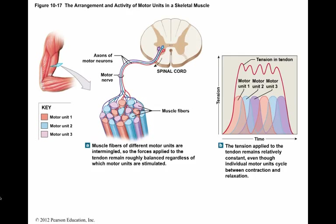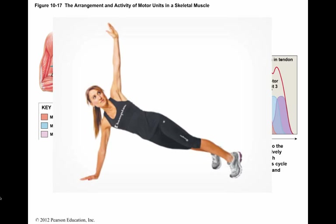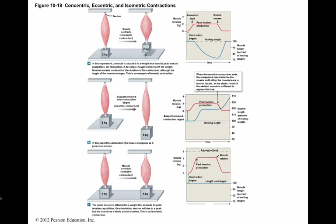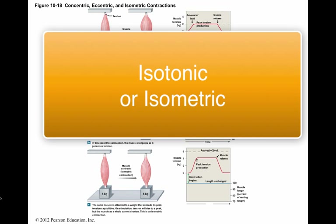For example, in order to maintain body position, there must be enough motor units stimulated to produce enough tension to do so. We classify muscle contractions as isotonic or isometric. Isotonic contraction is where the tension rises and the skeletal muscle's length changes.